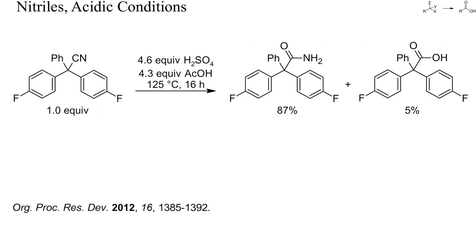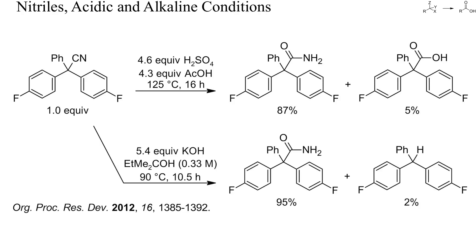Under acidic conditions, it can be difficult to stop nitrile hydration at the amide stage. Here, for instance, 5% of the acid was formed as byproduct. With an excess of potassium hydroxide and tert-amyl alcohol, no carboxylate but also a decarboxylated product was formed. Both reactions required heating and a relatively long reaction time, probably again because of the high lipophilicity of the starting nitrile.